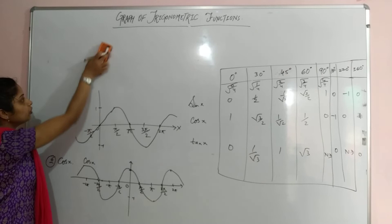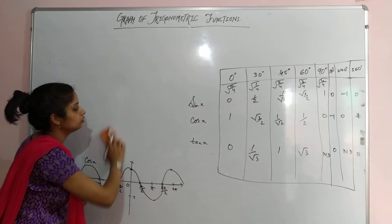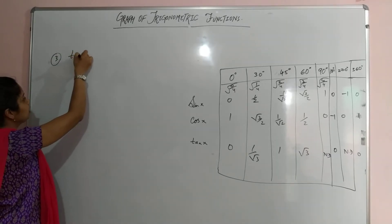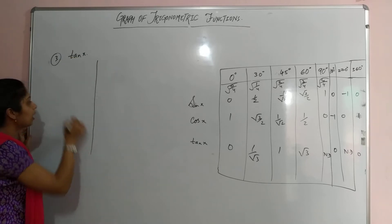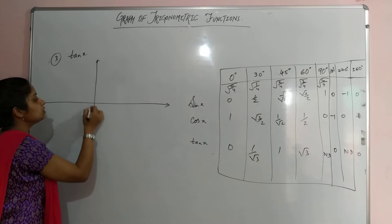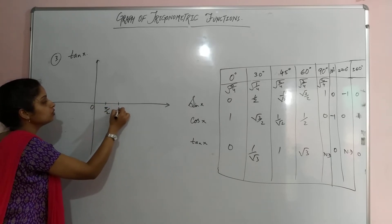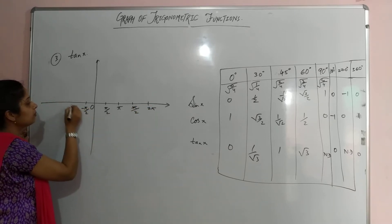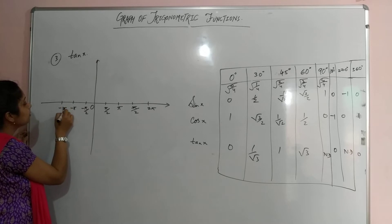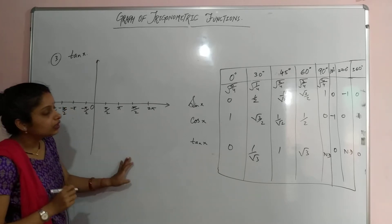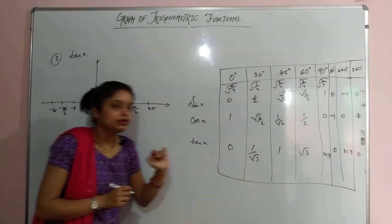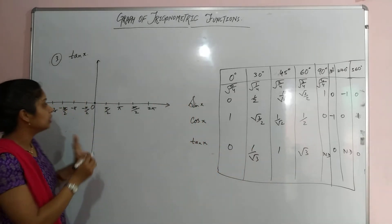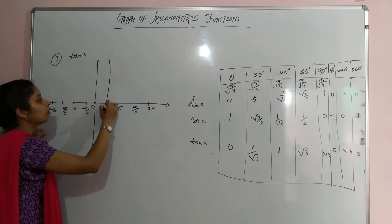Now I am going to draw the graph of tan x. Set up the same axes with values 0, π/2, π, 3π/2, 2π, and the negative counterparts. At 0°, tan is 0, so that point is at the origin. At 90° (π/2), tan is not defined.